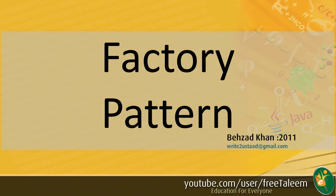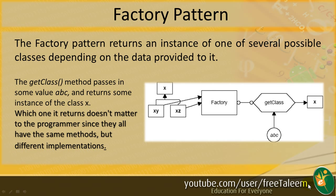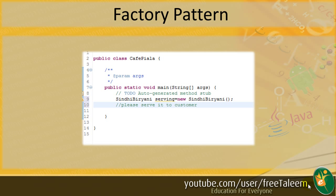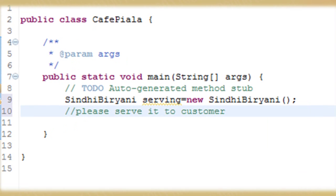The factory pattern is about how a factory creates things — in our case a factory creates objects. The factory pattern returns an instance of one of several possible classes depending on the data provided to it. For example, we have a café in Karachi whose speciality is Biryani. A user can send an order for Sindhi Biryani.